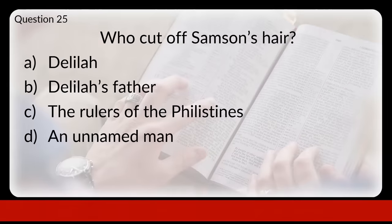Question twenty-five: who cut off Samson's hair? Was that Delilah, Delilah's father, the rulers of the Philistines, or an unnamed man? The answer is D, an unnamed man.